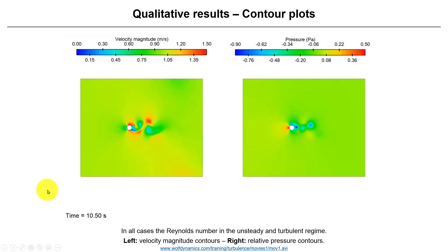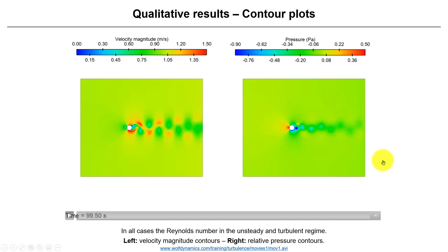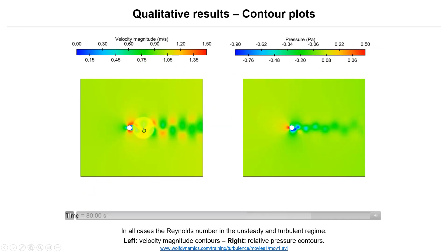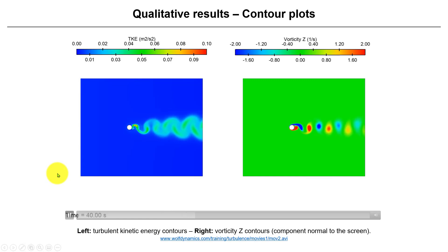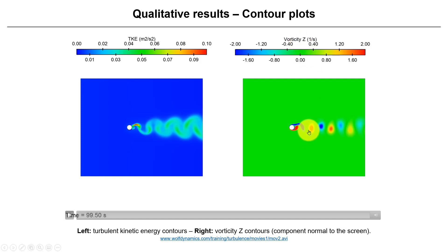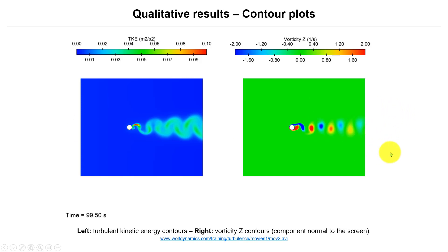All the results we're going to see correspond to Reynolds number 1000, unsteady and turbulent. We have velocity and pressure fields — you can see the onset of instability and the strong vortex shedding. Where you have the lowest pressure is the core of the vortex. We also look at turbulent kinetic energy, which tells you where you have fluctuations, and vorticity, which tells you where you have vortices and their sense of rotation — counterclockwise or clockwise.